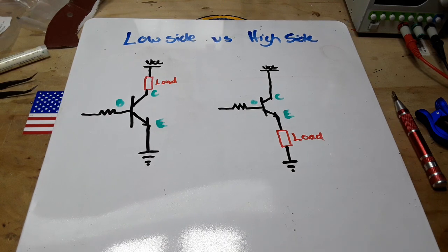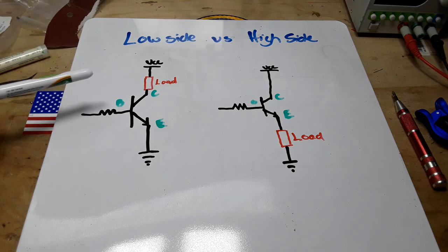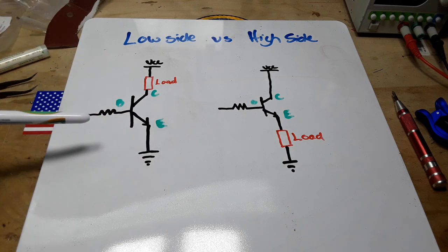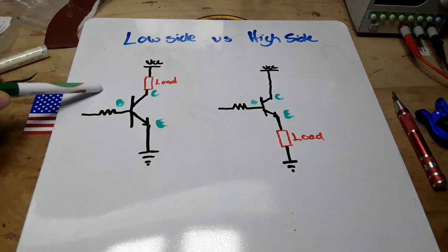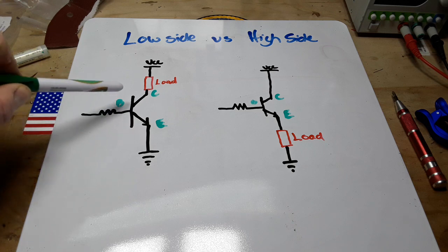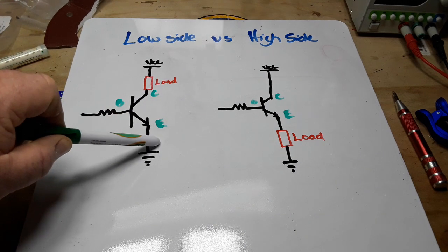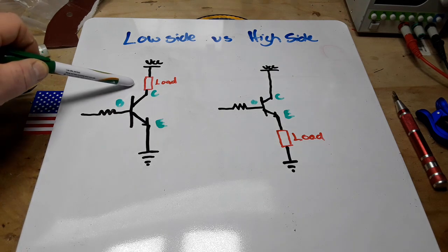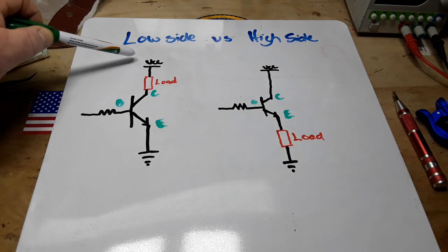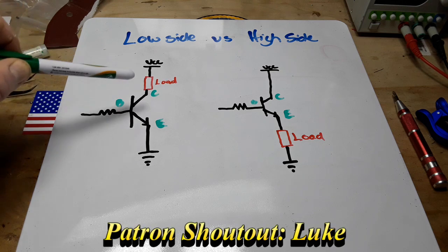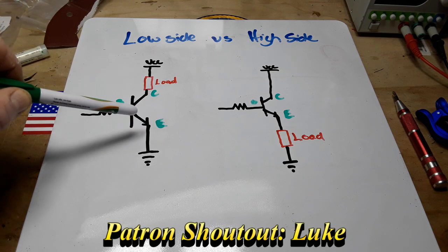So first of all, here is a low side switching situation. Here's our NPN transistor, there's a base, the collector and the emitter, and then our load is up here. Our load is always getting VCC and the transistor is switching the emitter to ground on and off.